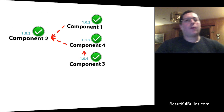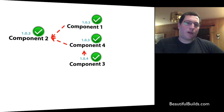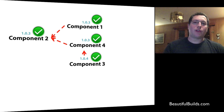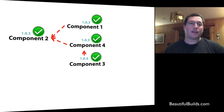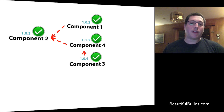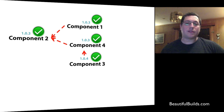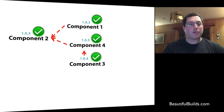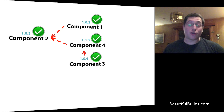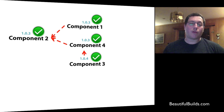In the previous videos I talked about versioning problems between components and their dependencies. For example, a component might depend on other components, and we would have snapshot dependencies between components to check their versions and make sure that the versions are all the same.